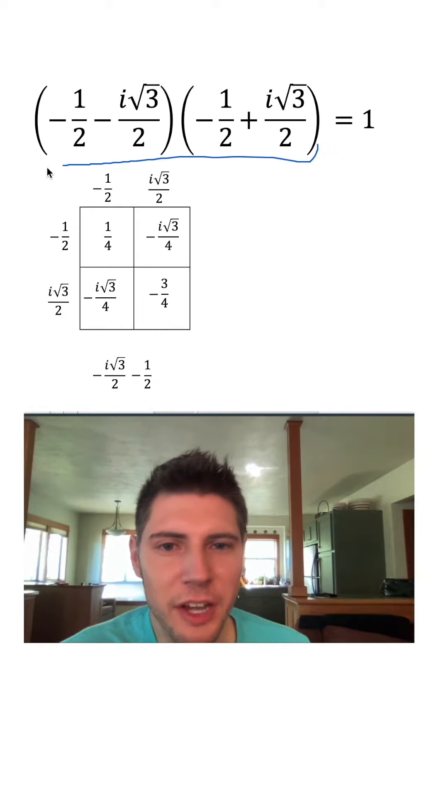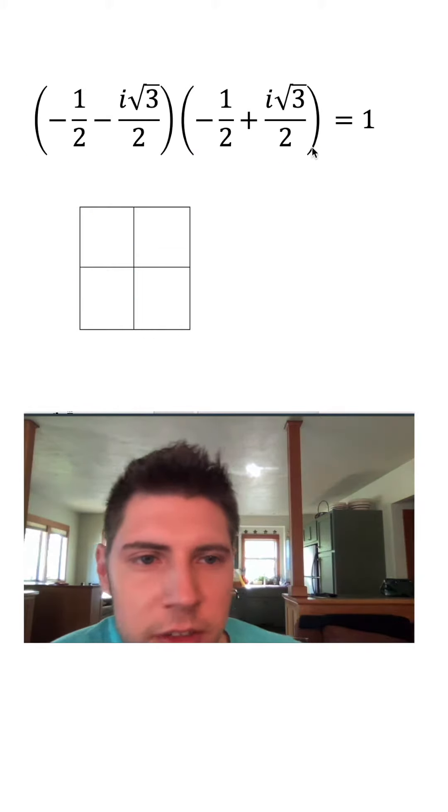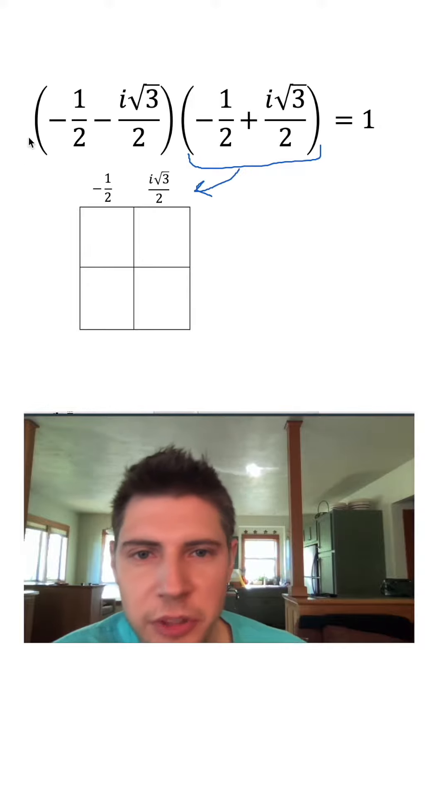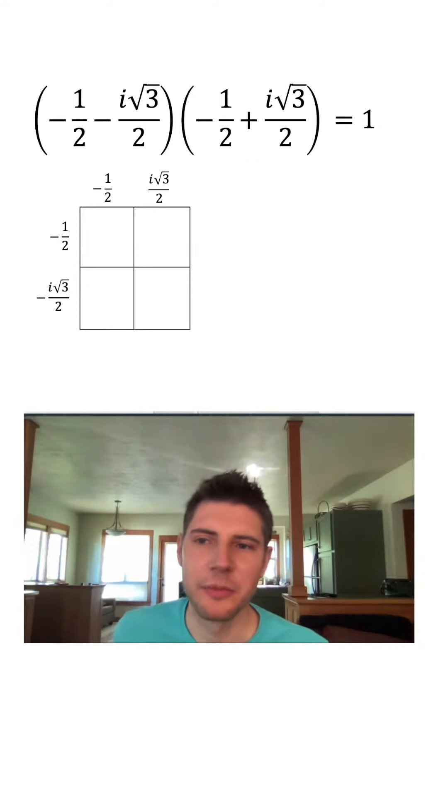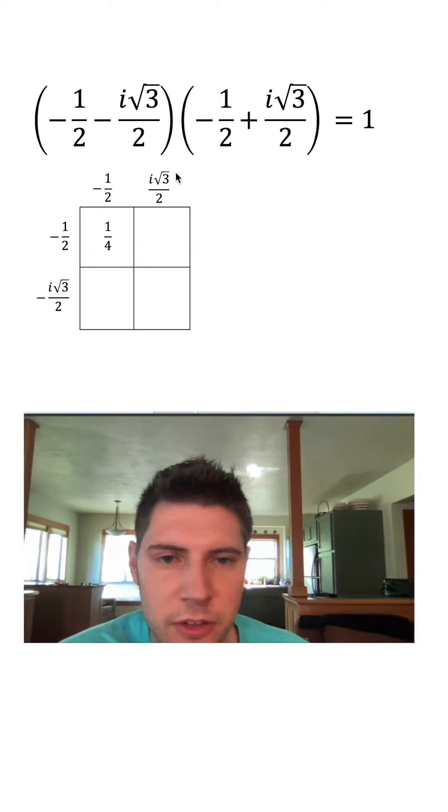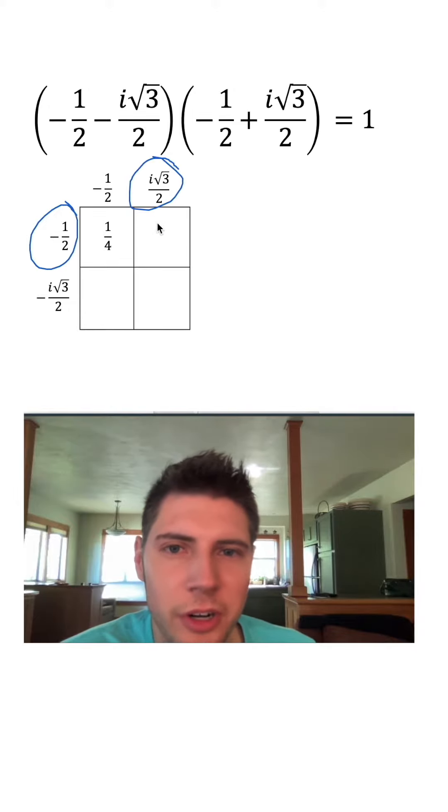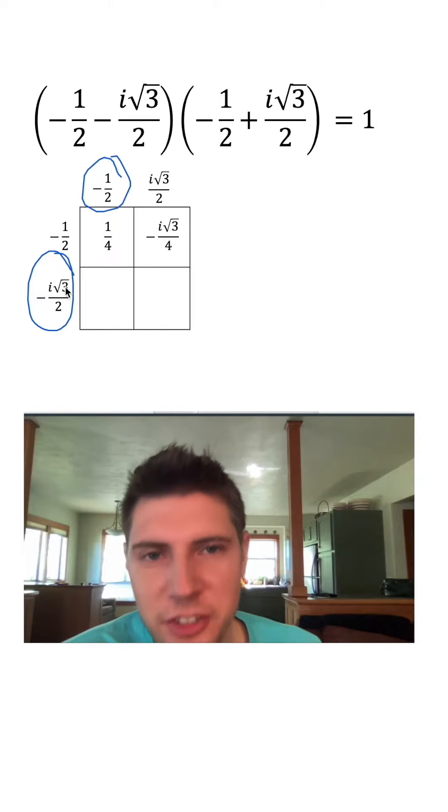And now we just need to multiply these two by each other. So let's erase all this stuff. Let's put this one on top and this one on the side. Negative one-half times negative one-half gave us one-fourth. So this times this would end up being negative i root three over four. And this piece times this piece is positive i root three over four.